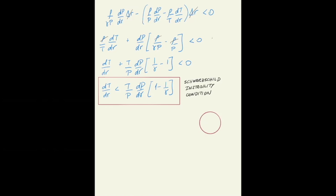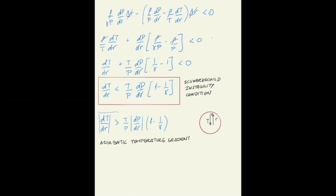This is resolved once we realize that these gradients are negative: temperature increases towards the center, but the radial coordinate increases outward, so the temperature gradient is actually negative. If we write this in terms of the modulus, the condition becomes that the modulus of the temperature gradient must be bigger than T over P times the modulus of dP/dr times one minus one over gamma. This defines the adiabatic temperature gradient for marginal instability, and the condition for convection is that the gradient is steeper than adiabatic.